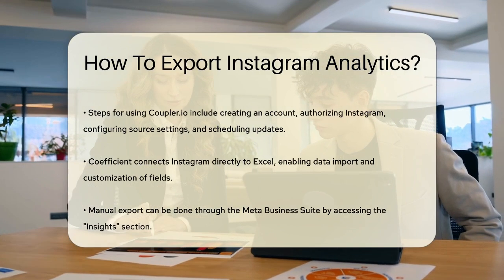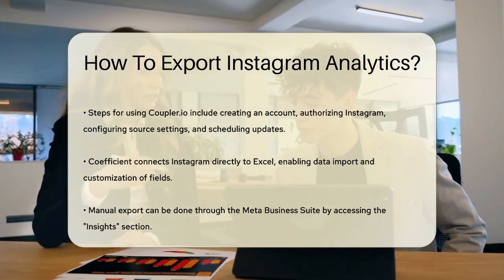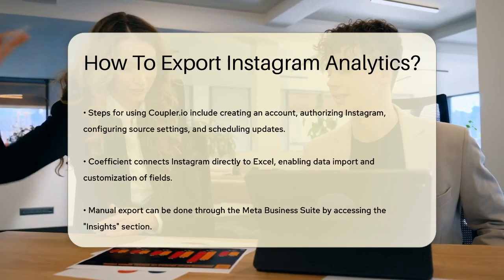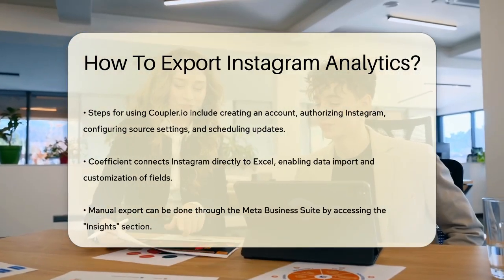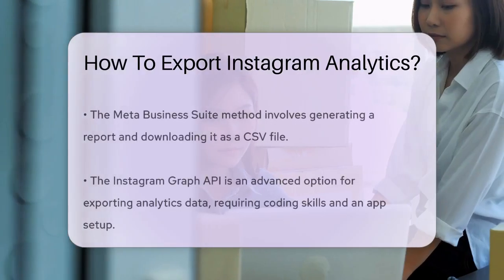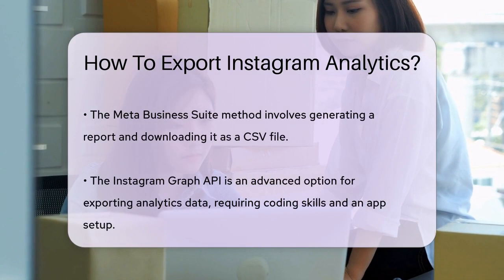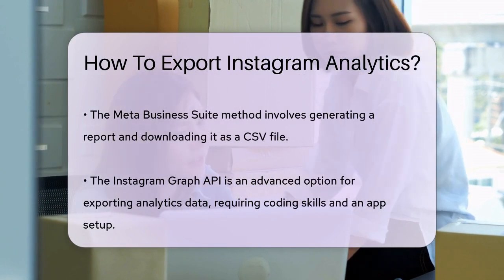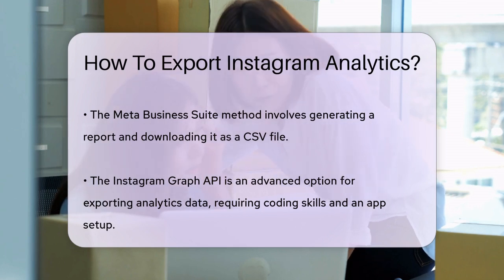Manual data export. If you prefer a more manual approach, you can use the Meta Business Suite. Here's how: Log into your Instagram business account and go to the Meta Business Suite. Navigate to the Insights section and select the Content tab. Click on Export Data in the right corner and generate the report. Once the report is ready, you can download it as a CSV file. This method is more time-consuming and can't be automated, but it's useful for occasional reports.